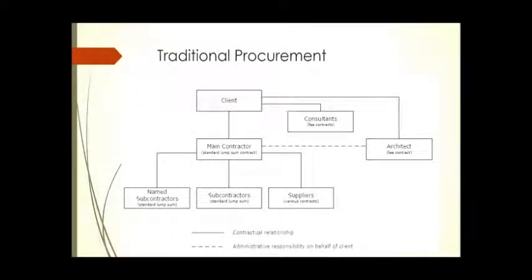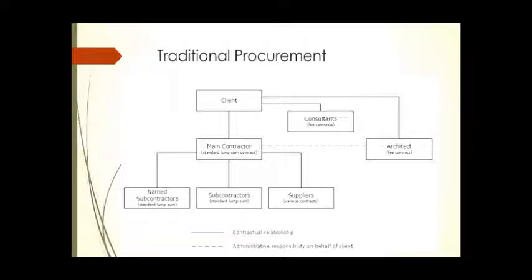Under the traditional procurement route, the client has a contractual relationship with the main contractor, and also a contractual relationship with the consultant. The architect is the one administering the contract and doing supervision. The consultant could be a cost consultant or anything, but the client could also have one consultant — the architect — doing design, supervision, and everything for the employer.